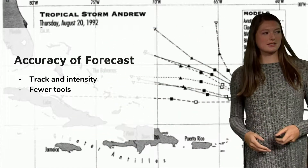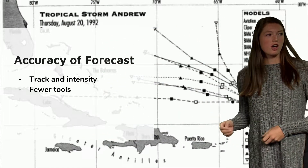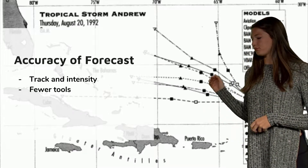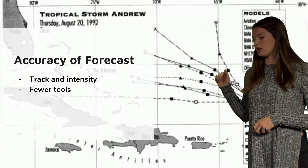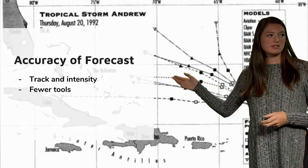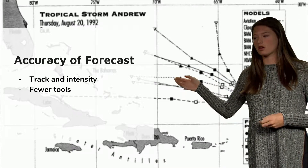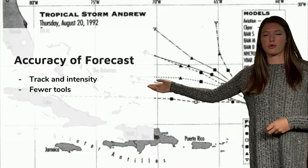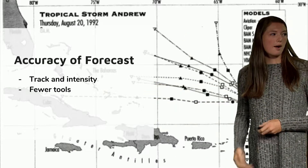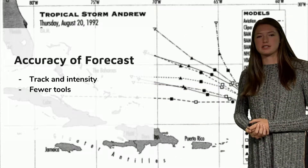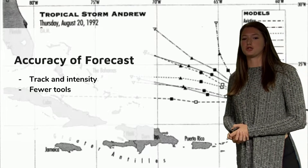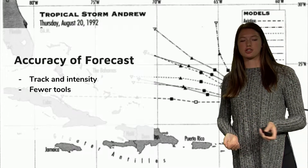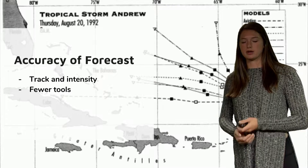The accuracy of the forecast — this is a picture from early on, around August 16th, when it was predicted. They didn't really know where it was going to be, so they had predictions going up and going where it actually went. The reason for this is because in 1992, they had fewer tools and their tracking devices were limited.